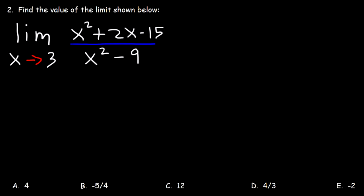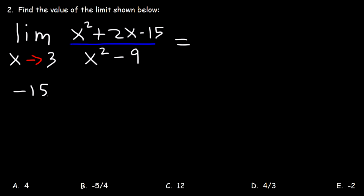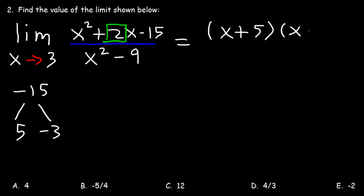Number 2, find the value of the limit shown below. Now if we try to use direct substitution, in the denominator we're going to get 0. So we don't want to do that. What we need to do is factor. So how can we factor the numerator? What two numbers multiply to negative 15 but add to the middle coefficient of positive 2? This is going to be positive 5 and negative 3. So to factor it, it's going to be x plus 5 times x minus 3.